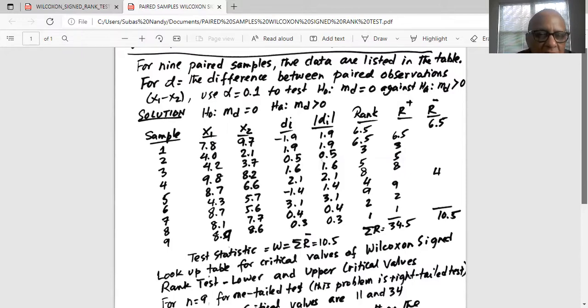Now like we have done for single sample, we separate the r plus and r minus. The r minus means the ranks for the negative differences. There are only two negative differences, minus 1.9 and minus 1.4, and their ranks are 6.5 and 4. We add them up, the total of r minus is 10.5.